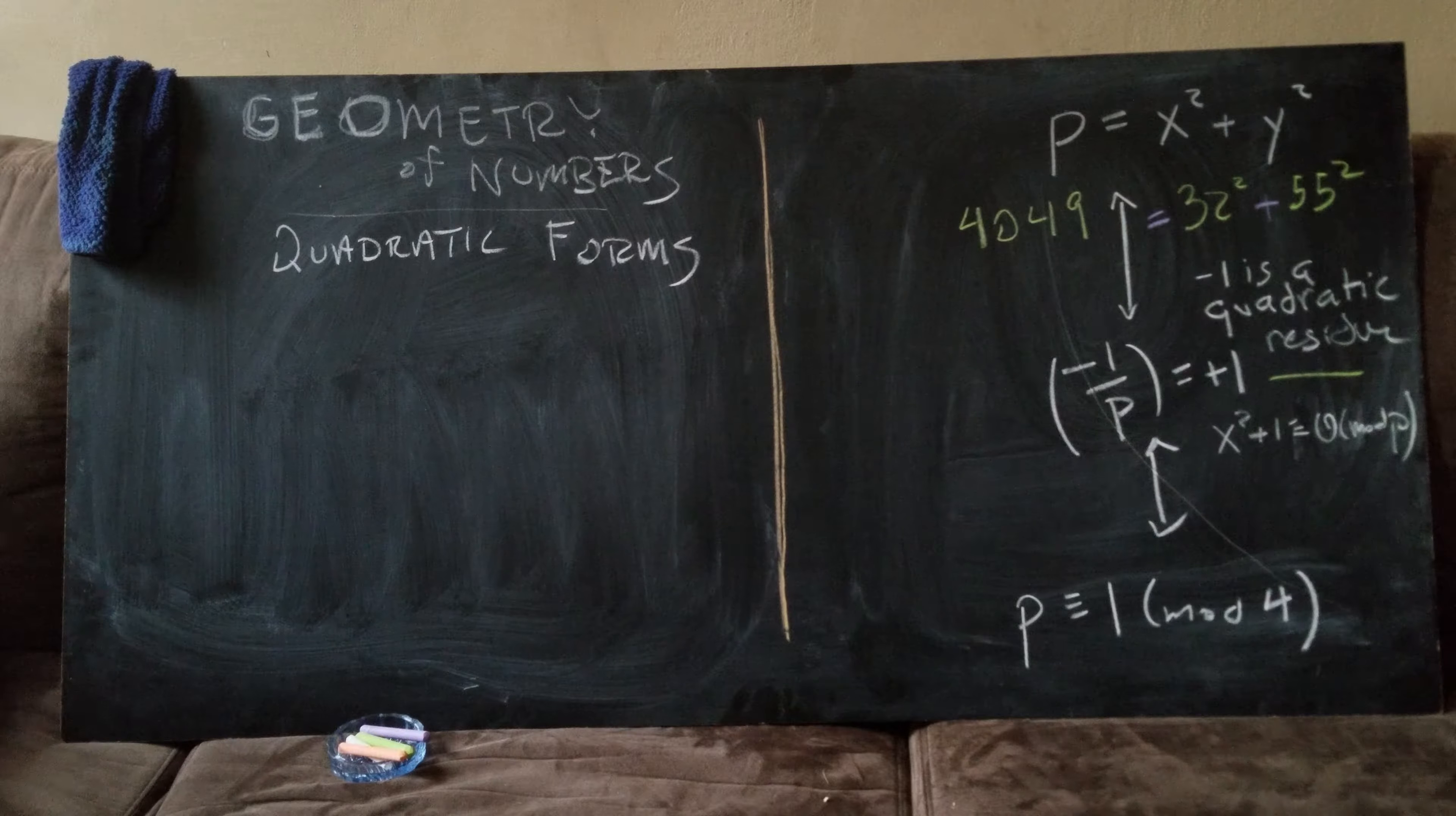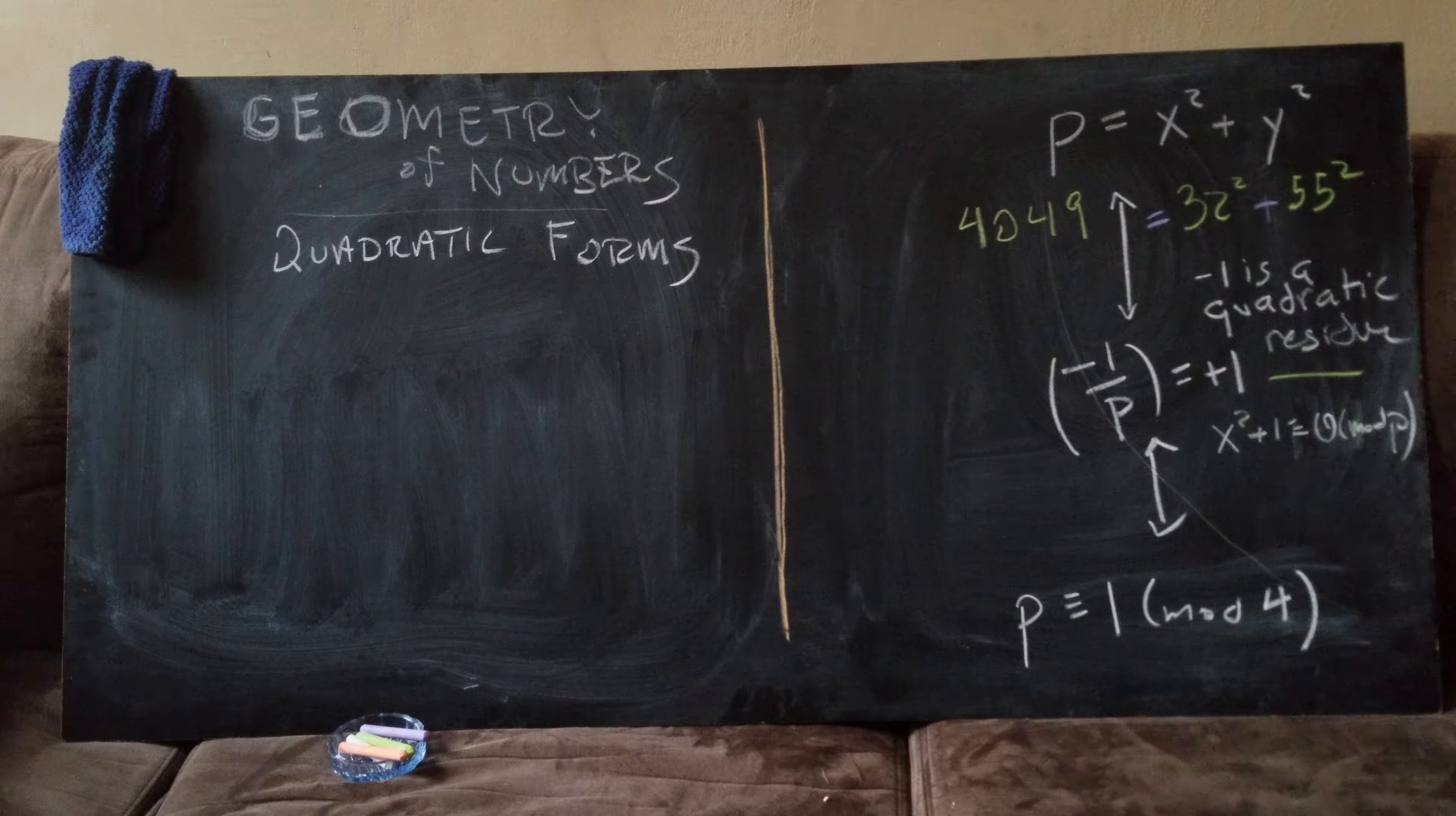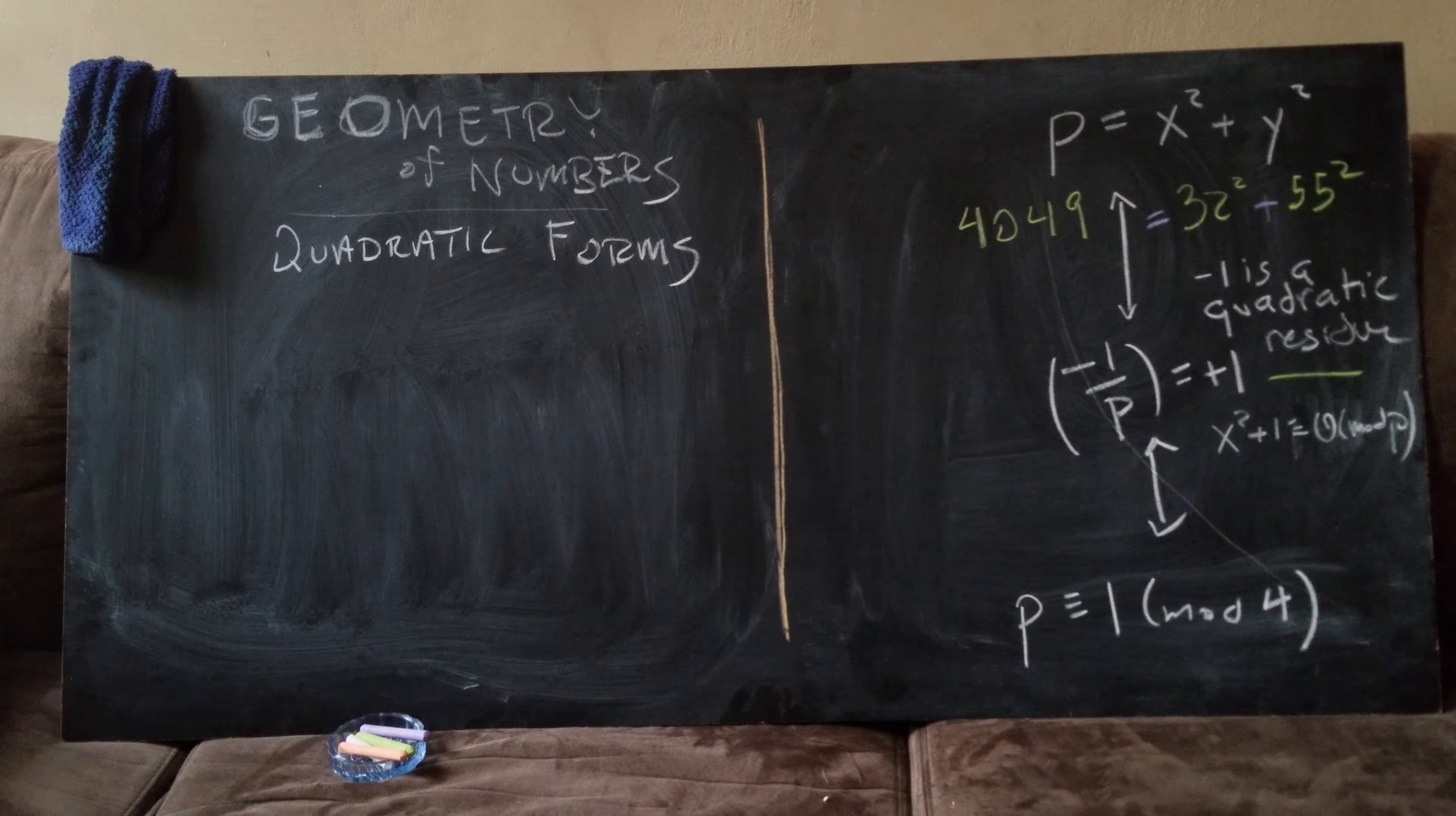So this statement does have content. I mean 4049, I don't think it's obvious that 4049 is a prime number or that it could be written as a sum of two squares. Here it's 32 squared plus 55 squared. So to see the difficulty of this statement let's add another four.